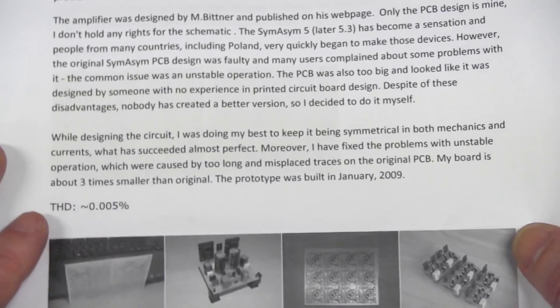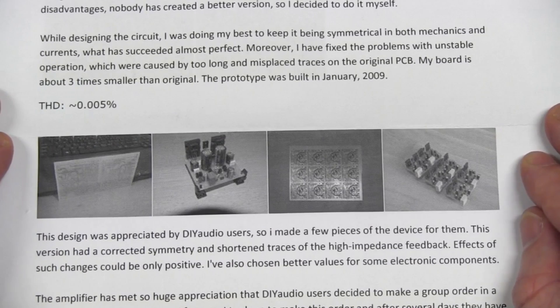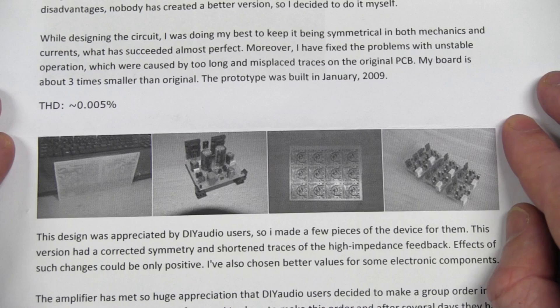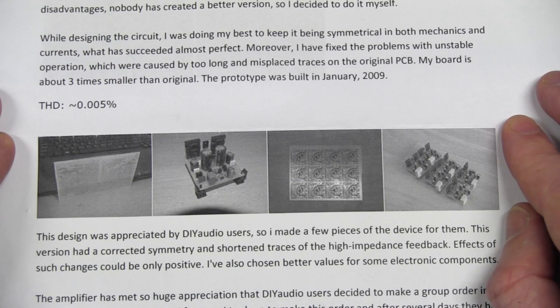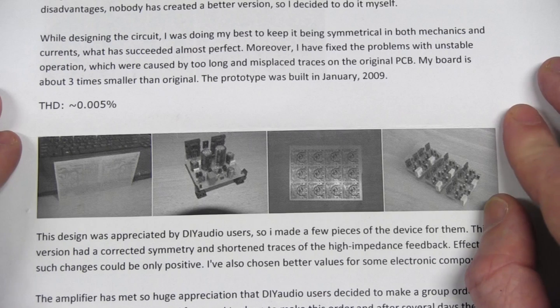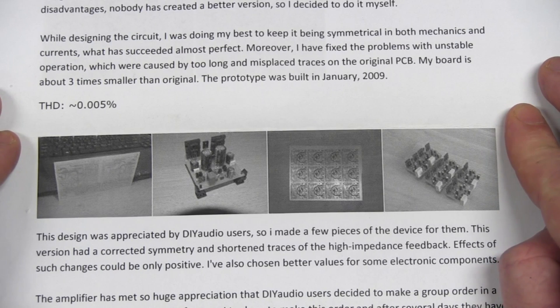All right. While designing this circuit I was doing my best to keep the symmetry in both mechanics and currents that has succeeded almost perfect. Moreover, I had to fix the problem with unstable operation. Excellent. Which was caused by too long and misplaced traces on the original PCB. Just a layout issue, not uncommon for these types of amps to have layout issues and be unstable. My board is about three times smaller. Wow. Awesome.